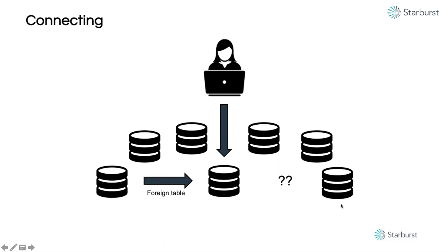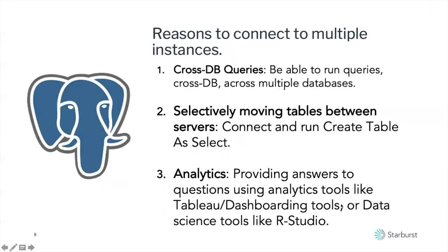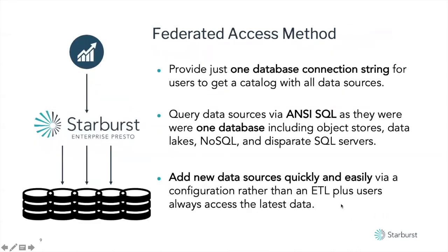Very often your data is actually found across the board, or you have reasons to connect to more than one server at a time. We've all run into situations where you need to query multiple systems. That includes cross-DB queries, selectively moving tables between servers — which we're going to do today — and analytics, which is a key one where you might be using something like Tableau or dashboarding tools or data science tools that really need to connect to many different data sources. You can make it simple by creating a federated access method, basically an abstraction layer, so that you can query many different data sources at once.